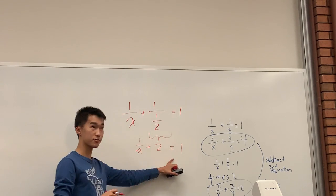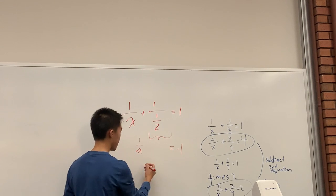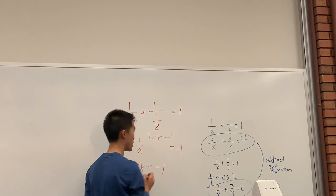And now what we can do is subtract 2 from both sides, and this becomes negative 1. And then you get x equals negative 1.